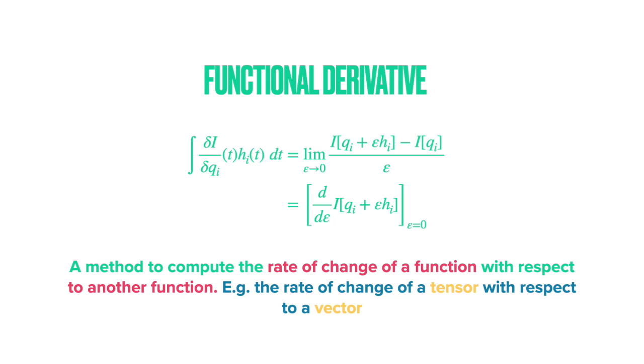For example, if you want to compute the rate of change of a tensor with respect to a vector, we could do that using functional derivatives. The functional derivative is defined analogous to the definition of the classical derivative. Instead of perturbing the independent variable, here we perturb the function with another function parameterized by the helper variable epsilon.